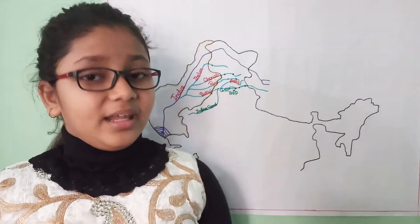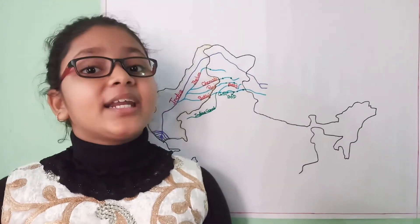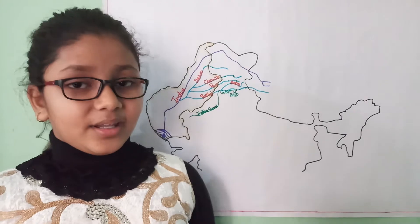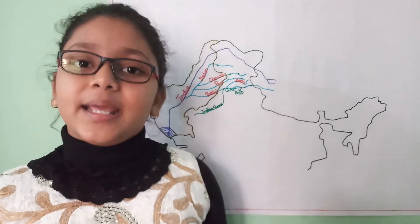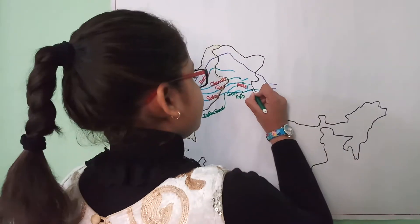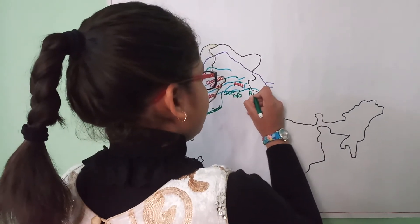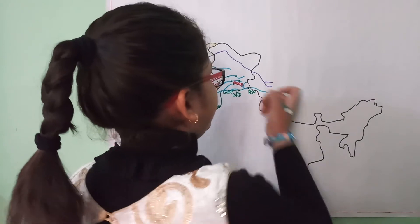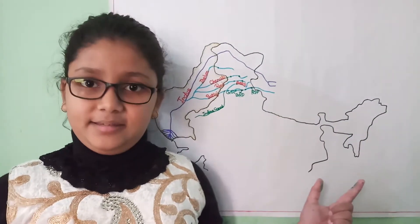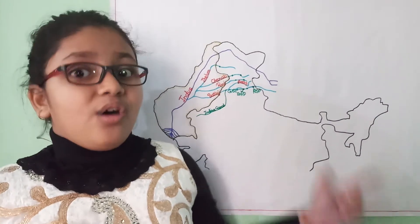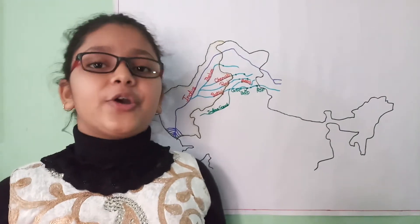So now comes the Nathpa Jhakri Hydro Project. It is built on the Satluj River in Himachal Pradesh here. Nathpa Jhakri Project. And its total power capacity is 1500 MW.